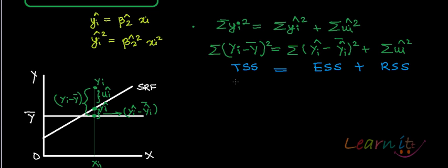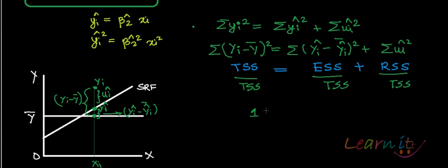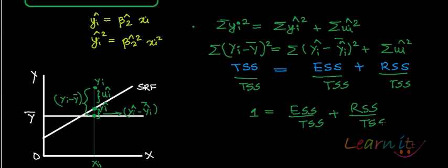Going further, you can divide both sides by TSS. What you will get is: 1 equals ESS/TSS plus RSS/TSS.